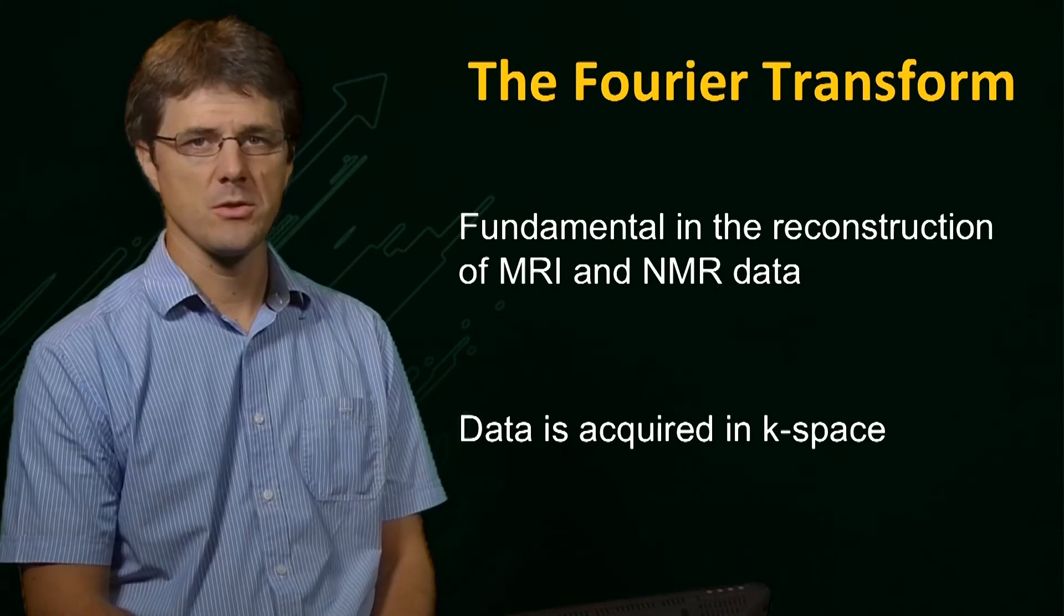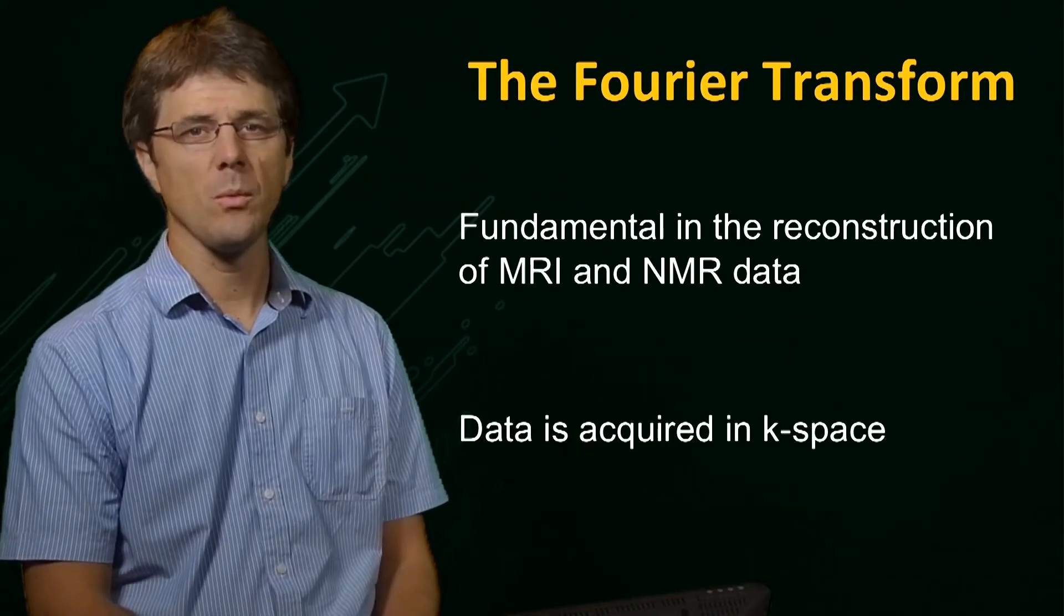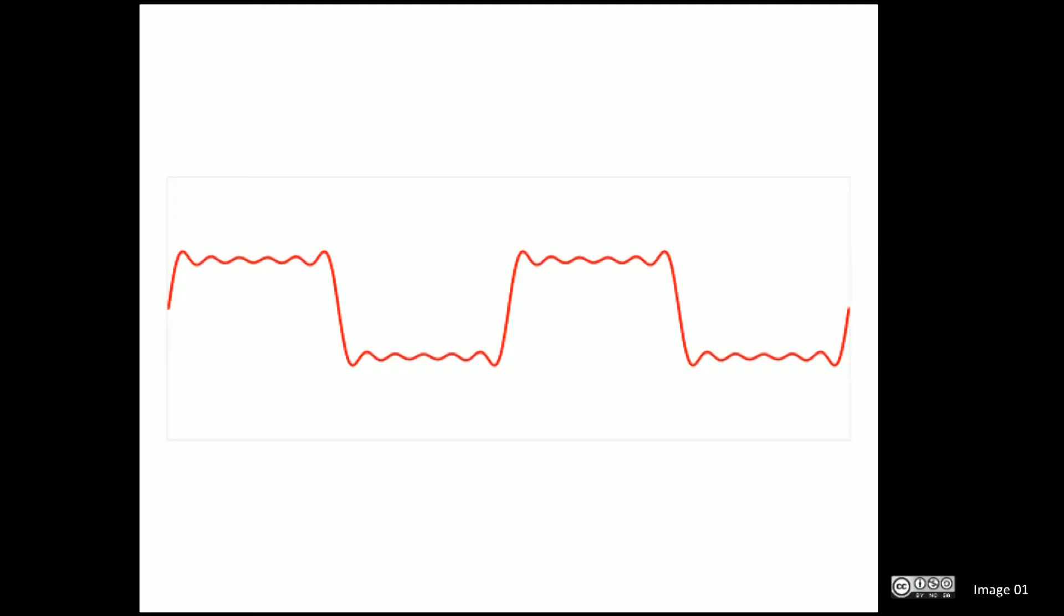To understand how this process works we'll look at a simple one-dimensional example. Here we see a simple waveform in red. The red line shows amplitude in the vertical axis and time in the horizontal axis. We generally use the notation f for this data.